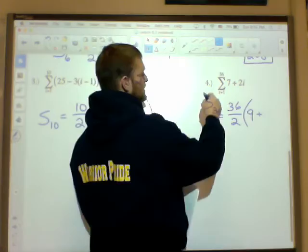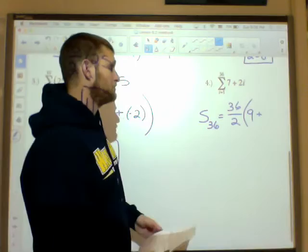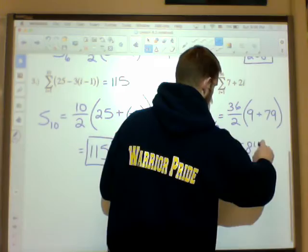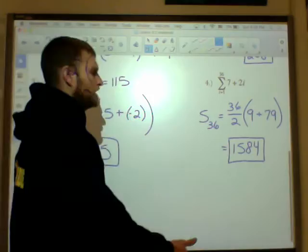And my last term is what I get when I put 36 in there. 7 plus 2 times 36, which would be 7 plus 72 or 79. So that's getting pretty large. And then I just have to crank that out, and I get my 1584. So this one gets pretty big.